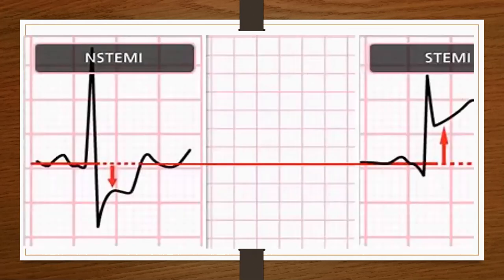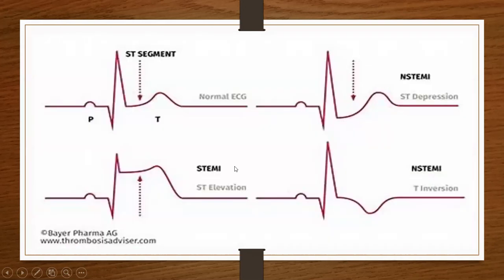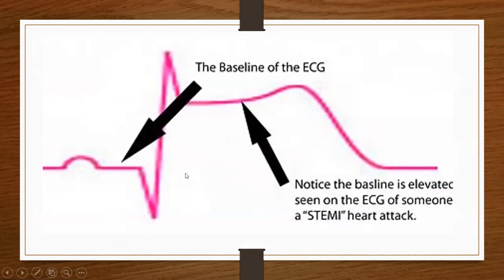Here we see an example of what the EKG will look like for a person who has a STEMI versus a non-STEMI. With the non-STEMI we see the ST depression, and over here is our ST elevation with the STEMI. Here again we see what the normal ST segment should look like on a normal EKG, then our ST elevation with the STEMI, our ST depression with the non-STEMI, and the T wave inversion with the non-STEMI.